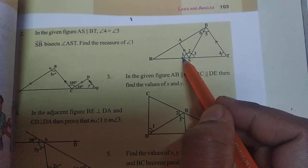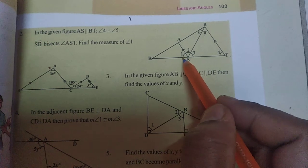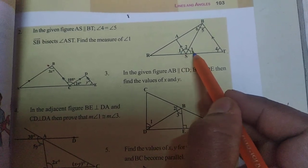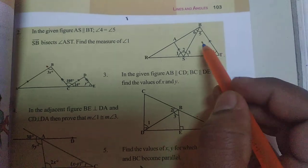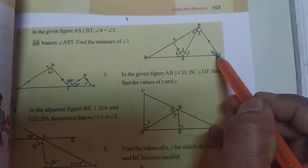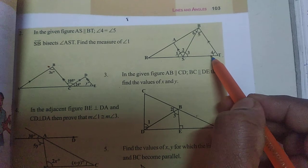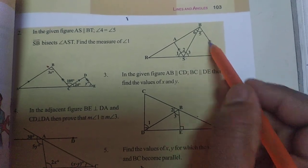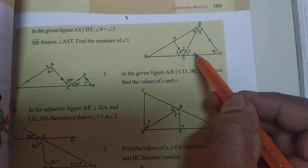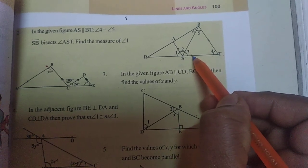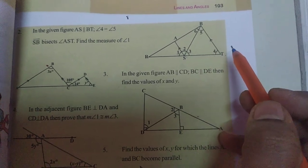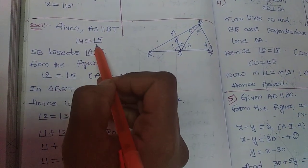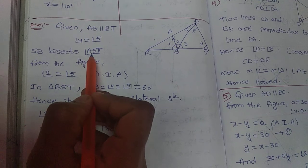We need to find the measure of angle 1. First, observe the two equal angles. We find the total triangle. Given: AS is parallel to BT, angle 4 is equal to angle 5, and SB bisects angle AST.